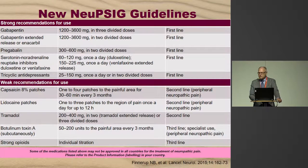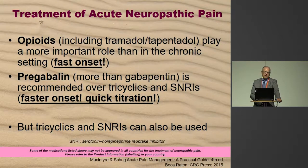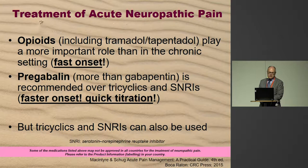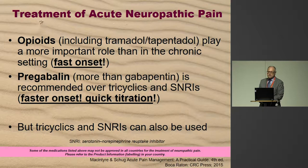Second-line treatments include tramadol, and opioids are recommended only as third line — not because they are less effective, but because of the associated problems. However, in an acute neuropathic pain setting, SNRIs and tricyclic antidepressants take a long time to work. In our cookbook — published alongside the guidelines — we say opioids including tramadol play a more important role than in the chronic setting because of fast onset, and pregabalin is recommended over tricyclics and SNRIs because of faster onset and quick titration.